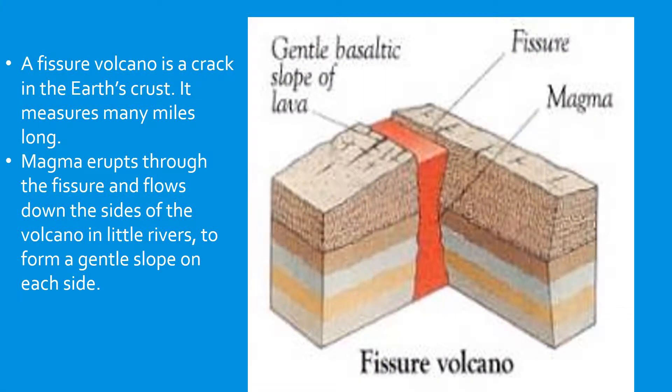A fissure volcano is a crack in the earth's crust which measures many miles long. Magma erupts through the fissure and flows down the sides of the volcano in little rivers to form a gentle slope on each side.